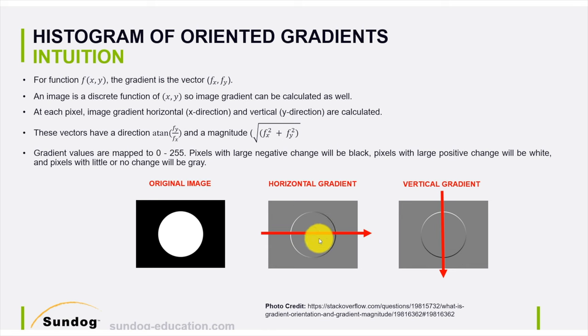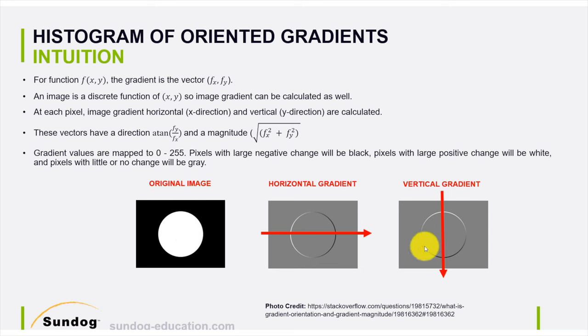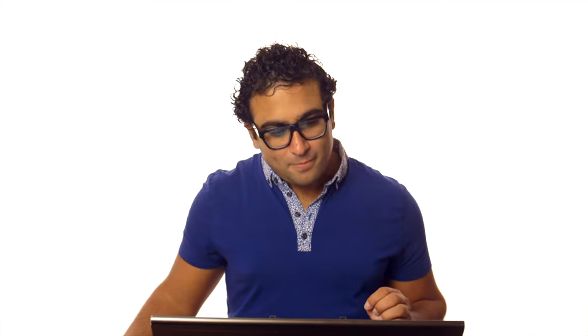Now let's do the exact same thing but for a vertical gradient, going from top to bottom. Again, you'll see white where you're going from black to white, and then a negative gradient shown as black where you go from white to black. That's how you take your original image, calculate the horizontal gradient and vertical gradient — the first basic foundations of HOG features.